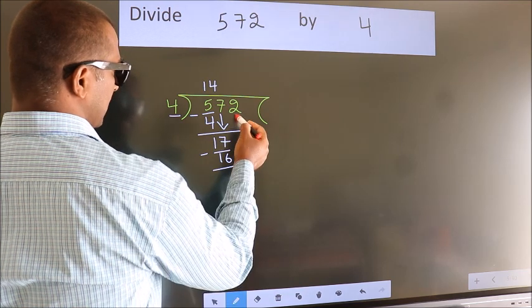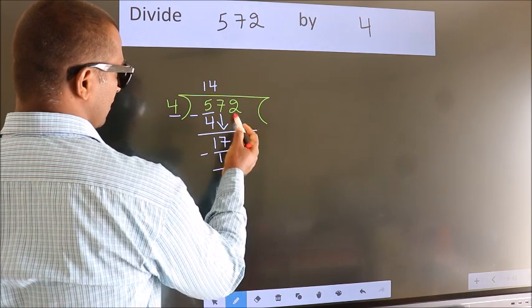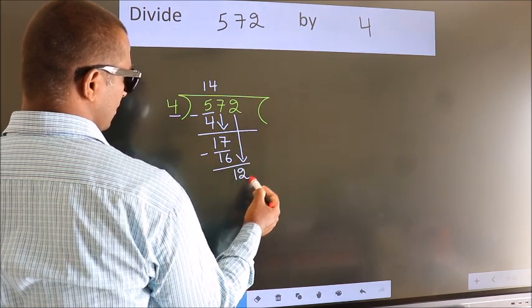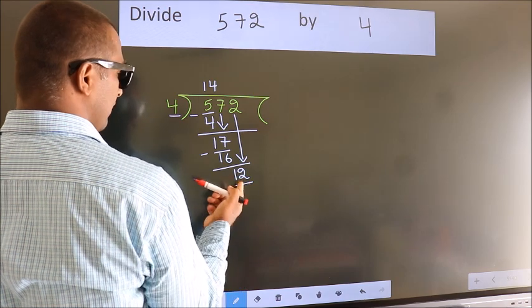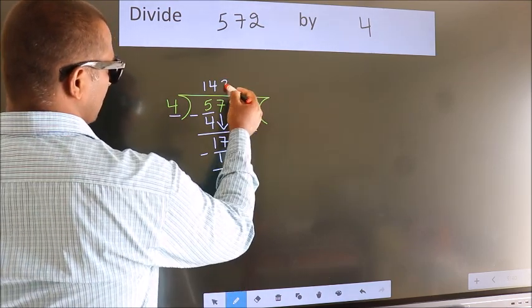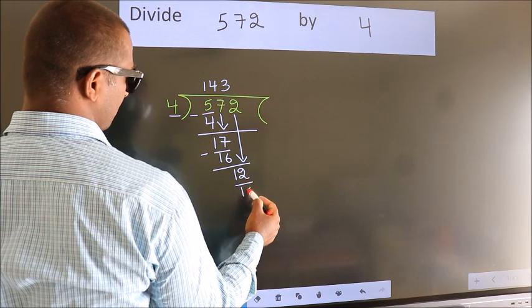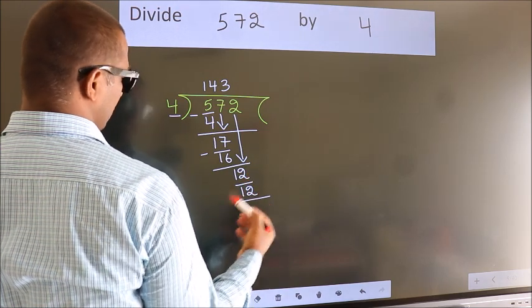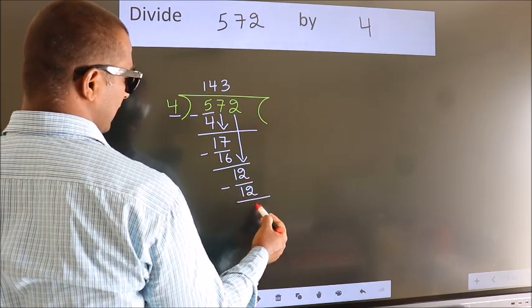After this, bring down the beside number. So 2 down. So 12. When do we get 12 in 4th table? 4 threes 12. Now we subtract. We get 0.